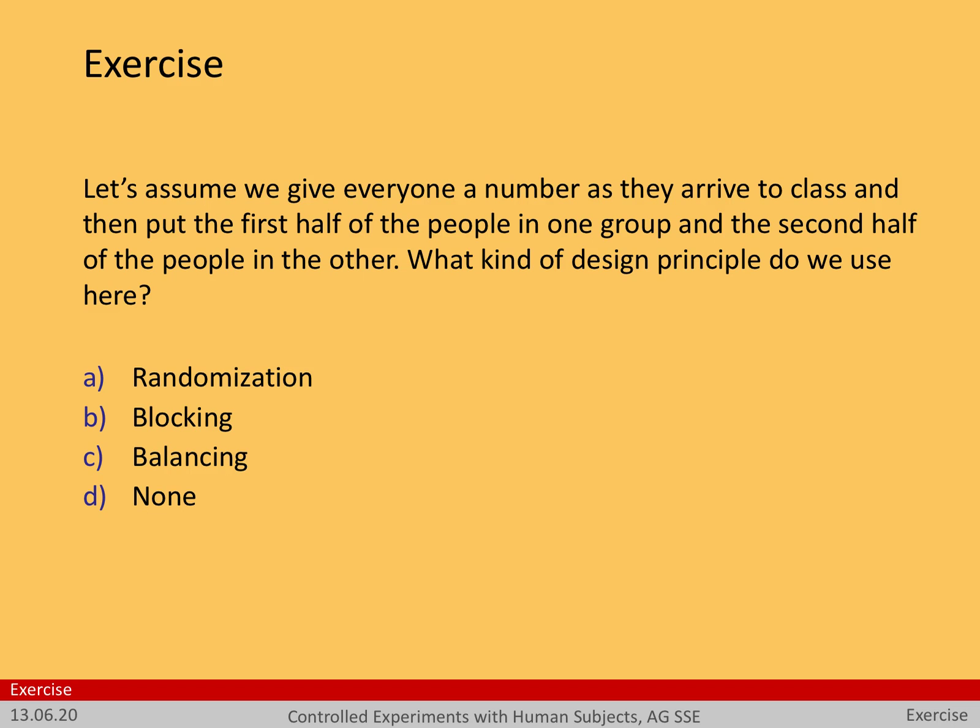Welcome back. Let's discuss each option. Randomization — did we randomize people? Someone could argue that people come more or less in a random order. However, that's not really true. There might be underlying factors: they might have had another class located close by and come over early, or some have a class on the other end of campus and come particularly late, or some people are particularly interested in the topic and make an effort to be early. All of these could be independent variables, and we would not randomize for them.